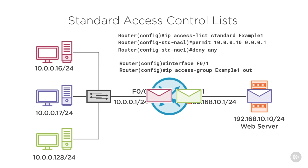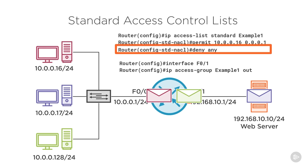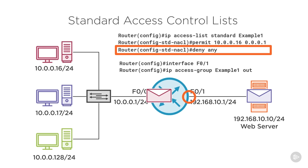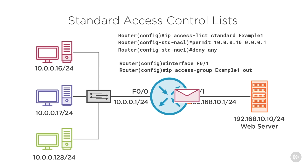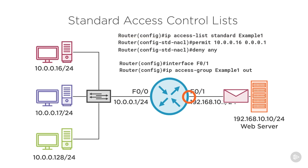The next packet hits F0.1 — the green packet came from 10.0.0.128, which does not match the first line allowing only 16 and 17. Moving to the next line, the filter is 'any' with action deny, so the message from 10.0.0.128 is denied and discarded. Then the maroon computer at 10.0.0.16 sends its message — we compare that to the ACL, find a match on the first line, permit the traffic, and forward it to the web server.